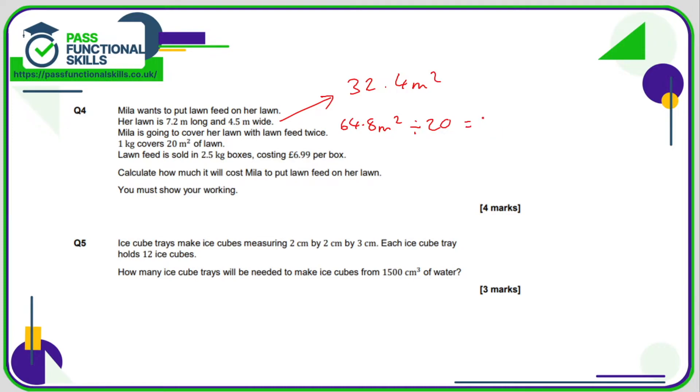We work out therefore that that requires 3.24 kilos of lawn feed. But the lawn feed is sold in two and a half kilo boxes, so one box isn't going to be enough—she's going to need two boxes. So she'll have five kilos, more than enough. Therefore, it's going to be two times £6.99, and two £6.99s comes to £13.